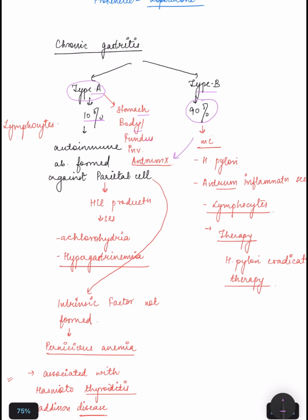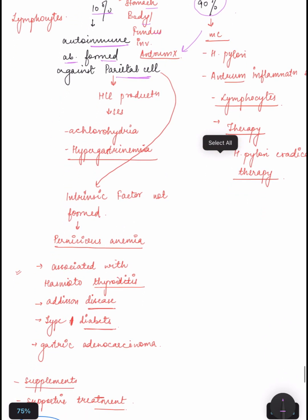Type A is associated with autoimmune mechanism - antibody forms against parietal cells of our own stomach layer. In this case, HCl production decreases, which will cause achlorhydria and hypergastrinemia.